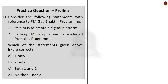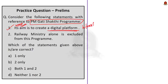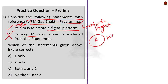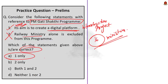The second question is a two-statement question with reference to PM Gati Shakti. The first statement is correct — PM Gati Shakti is a national master plan which aims to create a digital platform for integrating the implementation of various infrastructure projects. The second statement says the railway ministry alone is excluded from this program — this is absolutely incorrect, because the program includes 16 ministries including the railway ministry, roadways, civil aviation, etc. The question demands correct statements, so the answer is option A: one only.